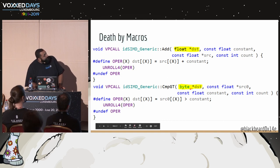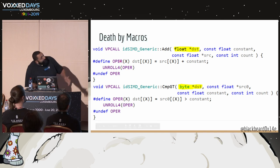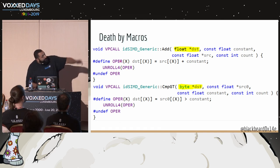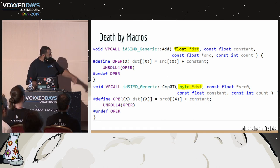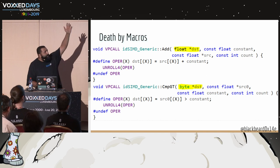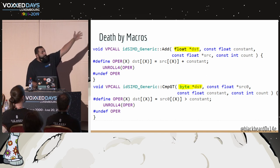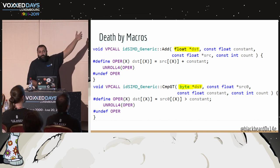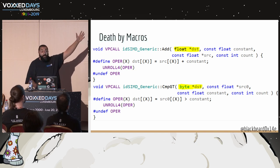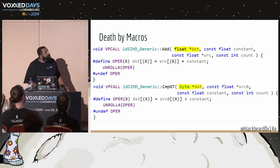Here's an example from the source code: the macro uses a `destination` input parameter — sometimes passed a float array, sometimes a byte array, in the same macro. It doesn't care about the type. It just search-and-replaces. If it compiles, go ahead. Have fun.